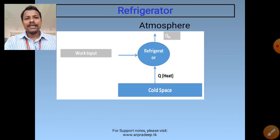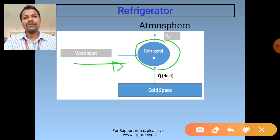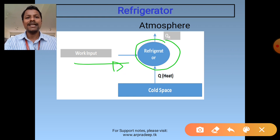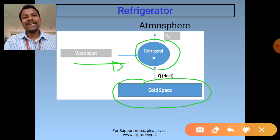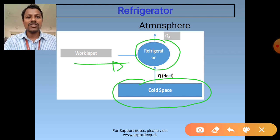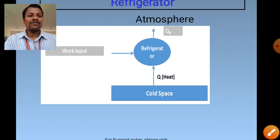Another part of the same module is psychrometrics and air conditioning systems. Psychrometrics is the science of studying the conditioning of air according to requirements, wherein we control humidity, temperature, and other parameters of the air for different requirements. We will study psychrometric properties of air, the psychrometric chart, and air conditioning processes including heating, cooling, dehumidification, humidification, and solve related numericals.